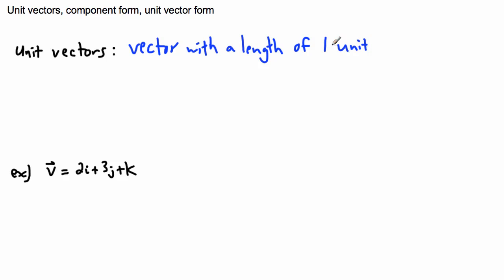There's lots of ways of defining vectors. This is one of them. So a vector with a length of one unit. If I was actually measuring a vector, it would actually have a length. It would be its magnitude, as we called it before.